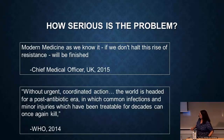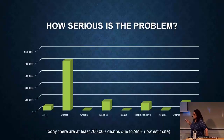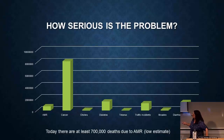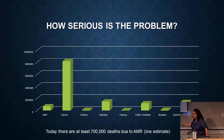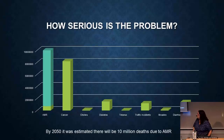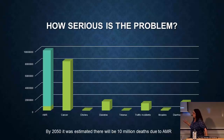A report from 2014 looked at causes of death from a number of different causes. For example, cancer accounts for about 8 million deaths per year worldwide. Antimicrobial resistance currently causes about 700,000 deaths per year, compared to diabetes and others. The prediction was made that if nothing is done — and that's key, if nothing is done — by the year 2050 the number of deaths due to antimicrobial resistance will be 10 million per year, actually exceeding the number of cancer deaths. Some people debate the exact number, but it is clearly a very big number.